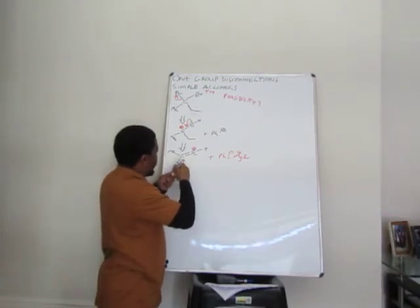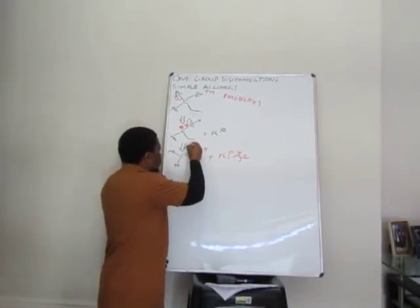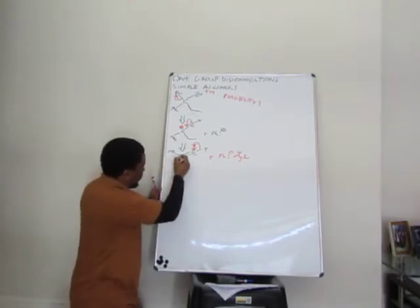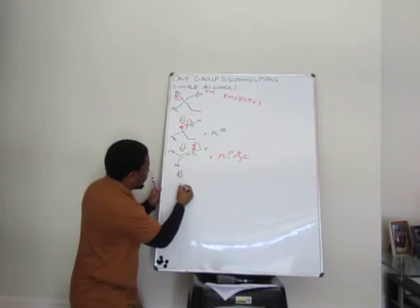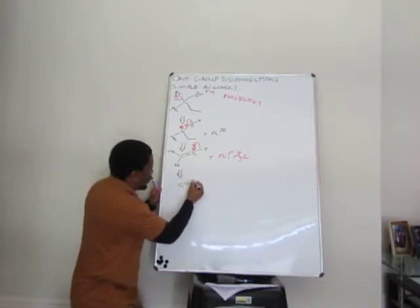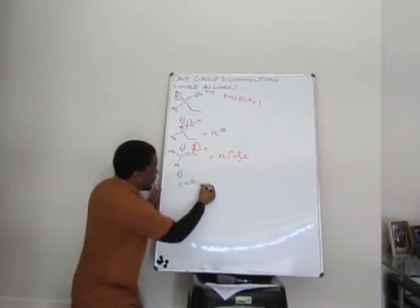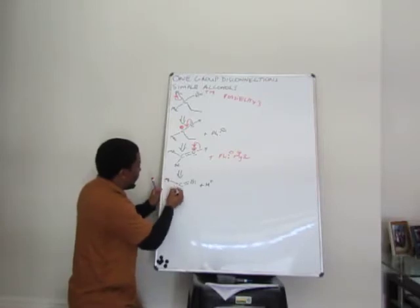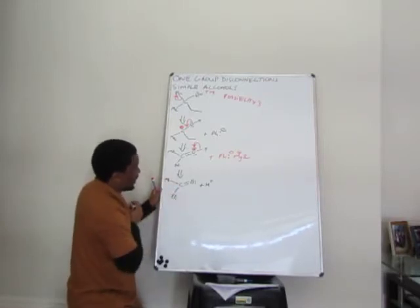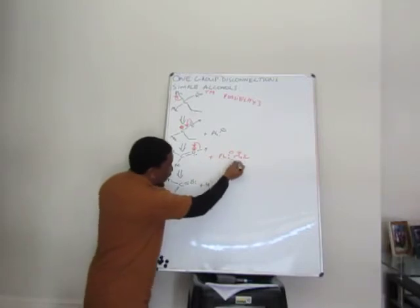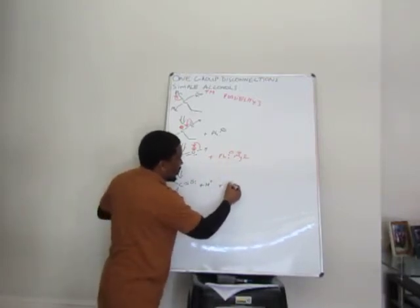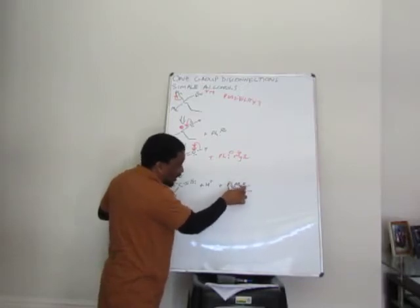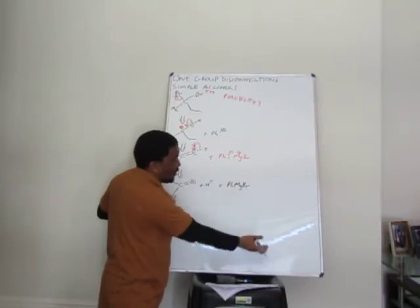What is it that we must have had here before? We must have had C double bond O, one two, one two, plus hydrogen falls off as H plus. This becomes our Me, this becomes our Et in that case. Where did this one come from?